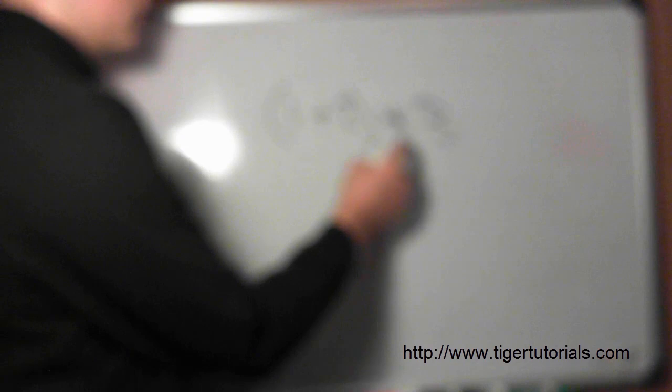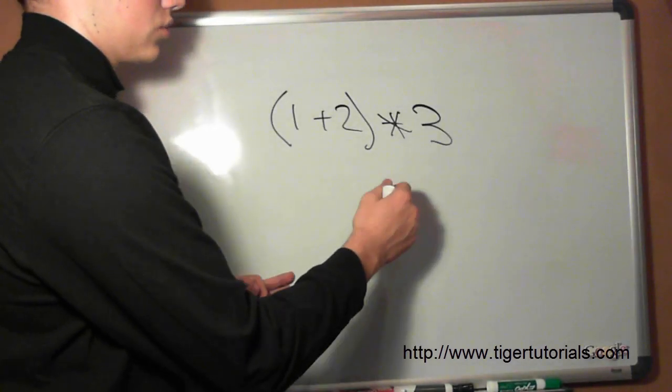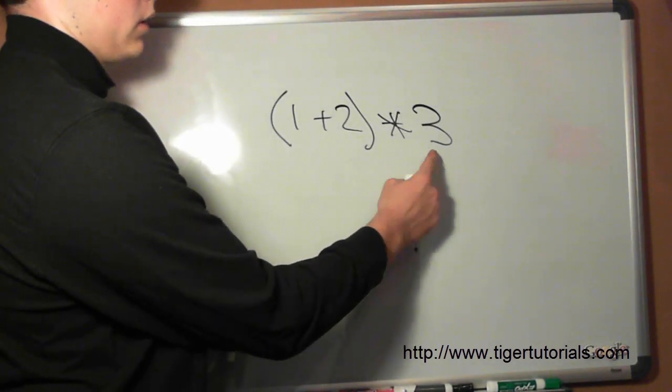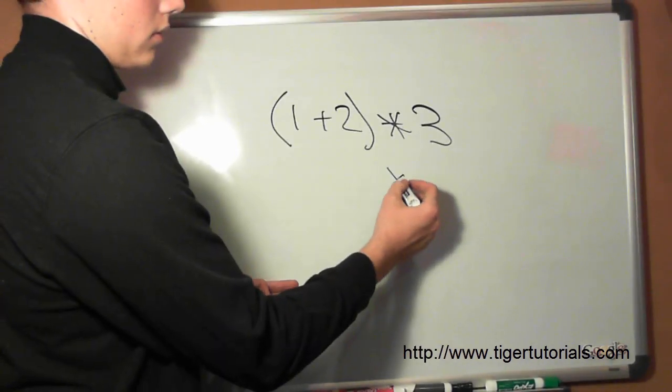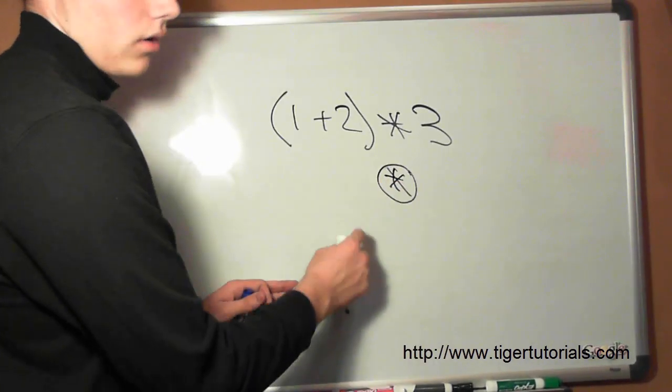Now we can take this and put it into a tree. First we split the 3 and this 1 plus 2 by this multiplication sign. That's going to be our root node.